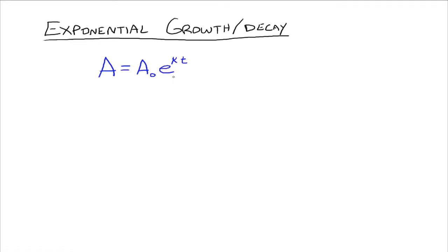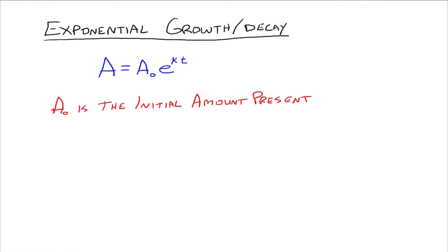That is the same E, and those are the variables K and T. So what do all these things mean? A naught, or A sub zero, is the initial amount present. Whenever you have that little sub zero, it usually means the initial value of whatever your variable represents. In this case, A represents the amount, so A sub zero is the initial amount present — how much is there at time equals zero.